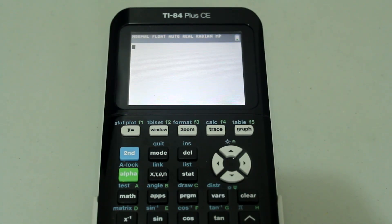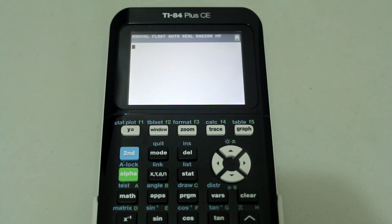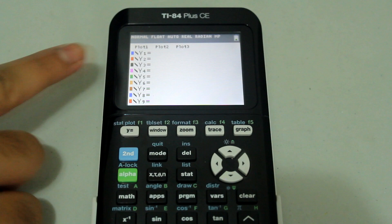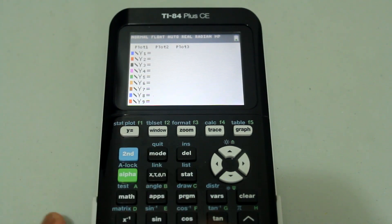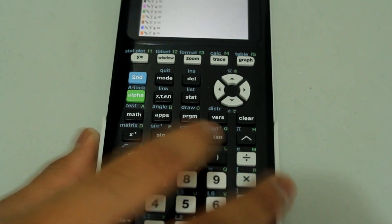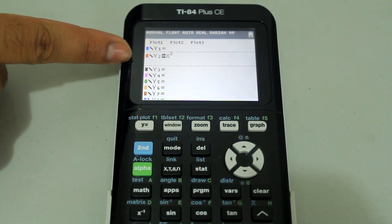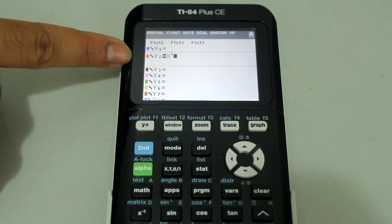Let's transform the graph of x squared vertically. First, press y equals and that brings up the y equals menu. Arrow down to y2 equals and type in x and square that. I only typed in x squared under y2 equals simply because I wanted the red color.